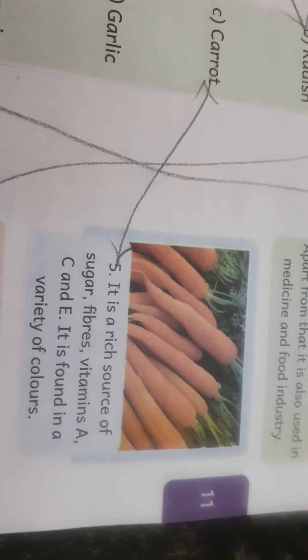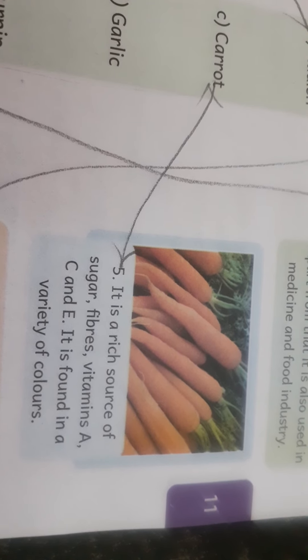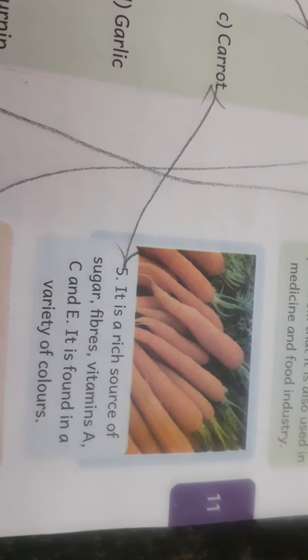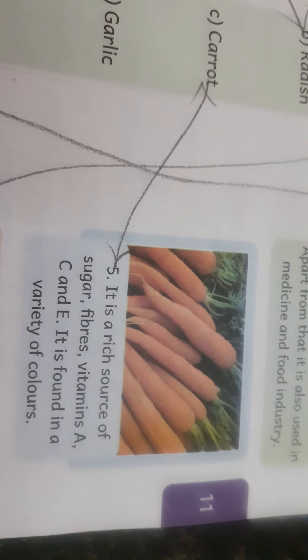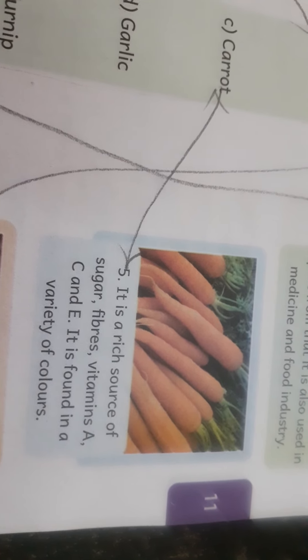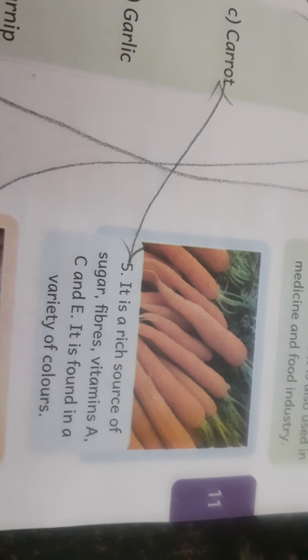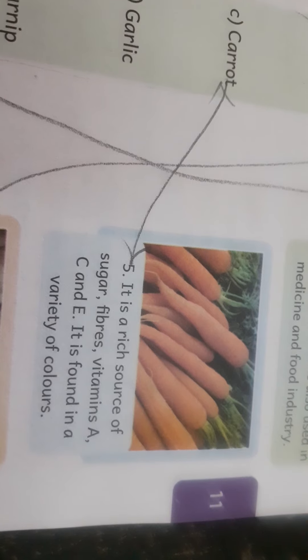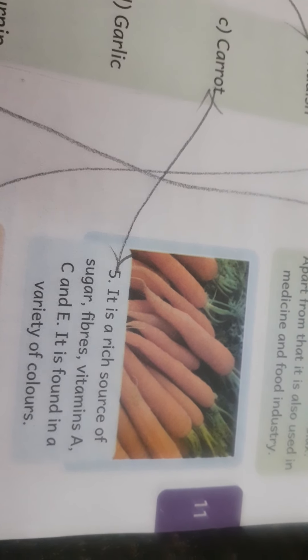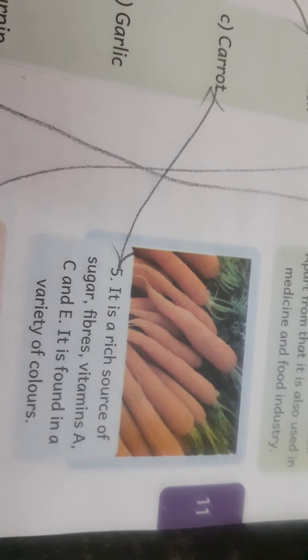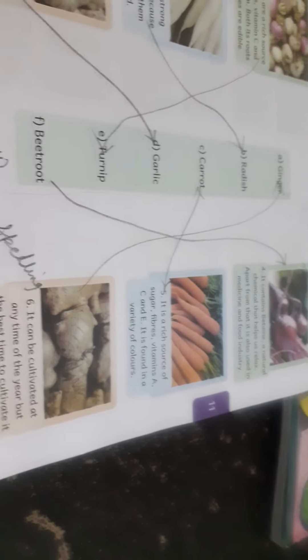Next is carrot. It is a rich source of sugar, fiber, and vitamins A, C, and E. It is found in a variety of colors — we can see red and orange colored carrots.